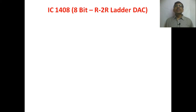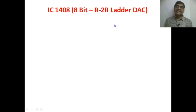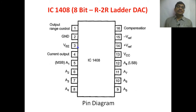In the last class we have seen about the various characteristics and errors in the digital to analog converter. Now we are going to see about the IC form of the R2R ladder DAC. This R2R ladder DAC can be available in IC format which has the IC number IC 1408. Let us see the pin diagram of IC 1408 — it is a 16-pin IC which is in the DIP (Dual Inline Package).